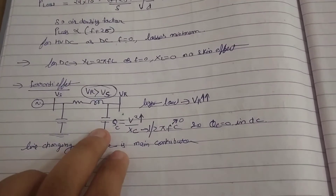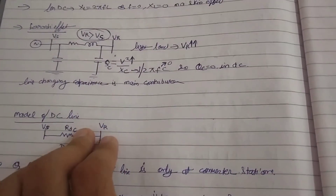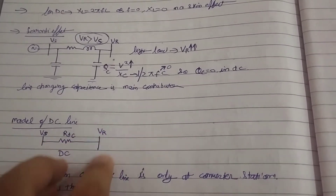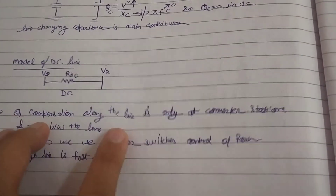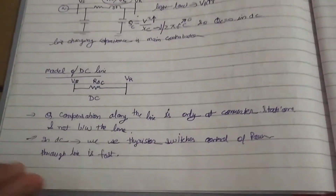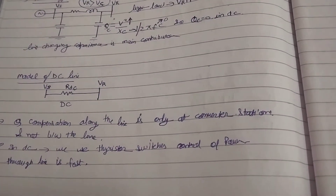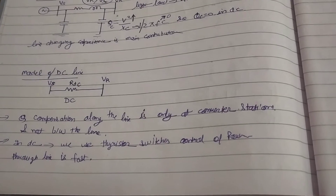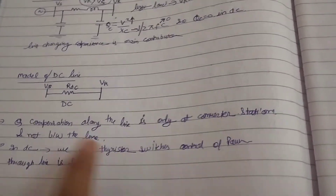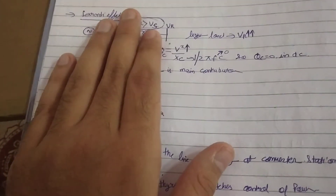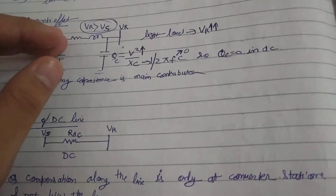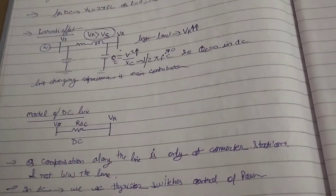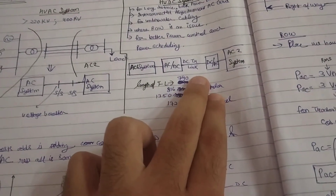Basically, if I model DC or HVDC, I only represent the resistance — no capacitor model as in AC. Q compensation along the line is only at the converter station and not between the line. In DC, we use thyristors as switches, and control of power through the line is fast. I can transfer power from one end to another and control how much power is sent using the AC-to-DC and DC-to-AC converters. This is the difference between HVAC and HVDC systems.